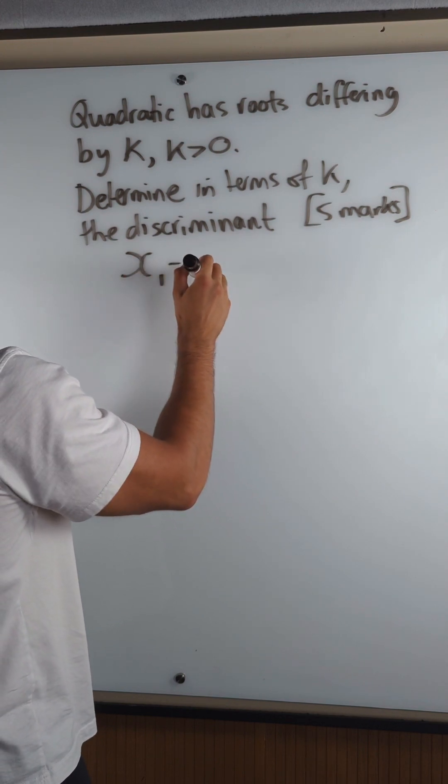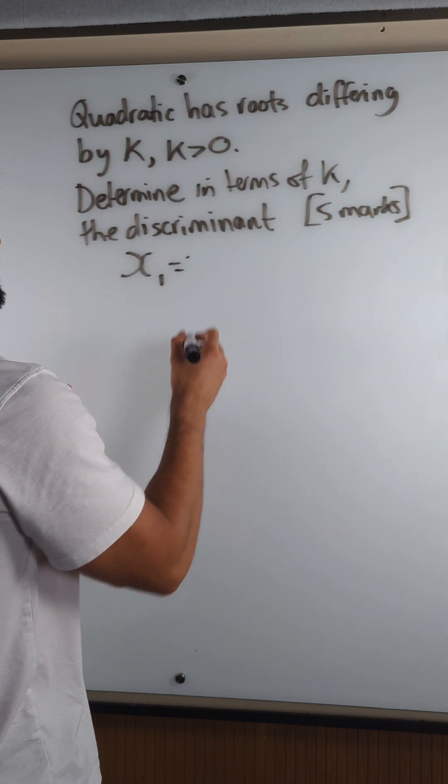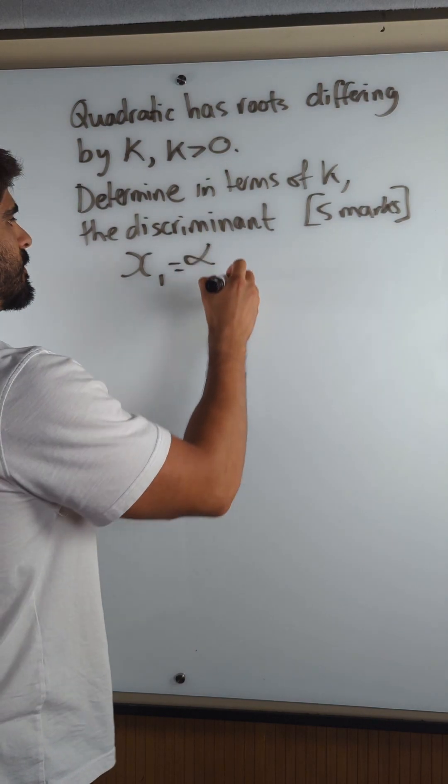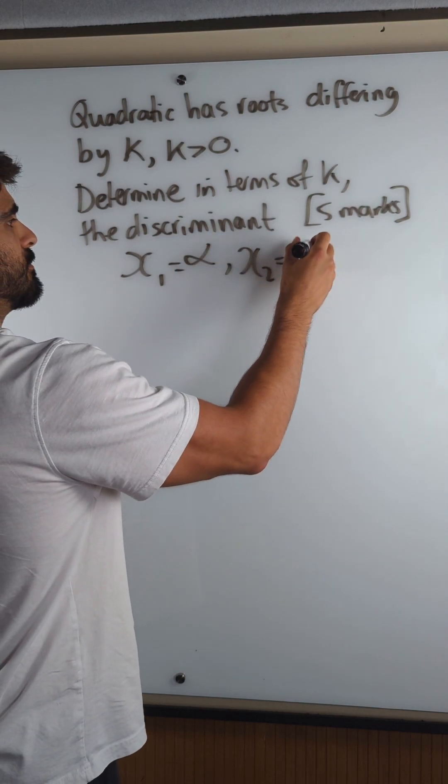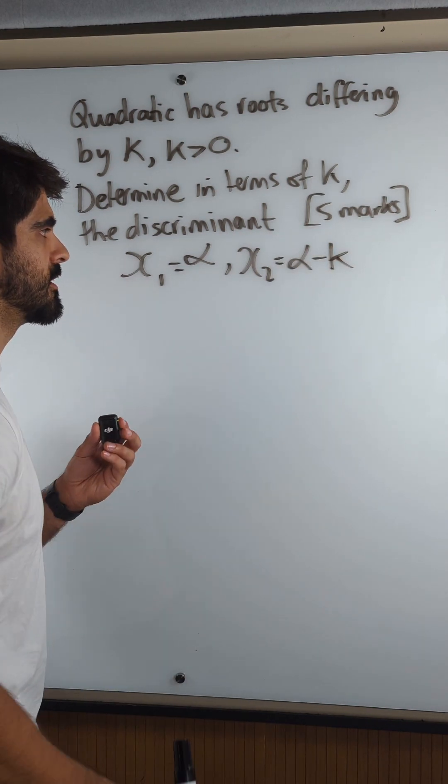Now let's just say one of the roots is, well if we're doing it generally, let's just say, in further maths we like to use alpha. And let's let the second root be alpha minus k. So then they're differing by k units.